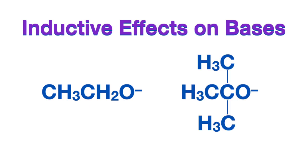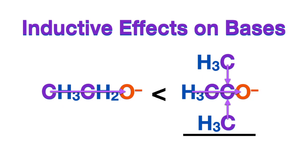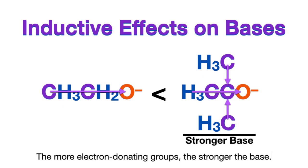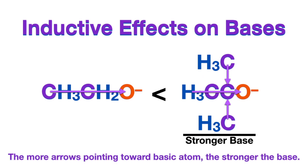In these two basic compounds where the negatively charged oxygen is the basic atom in each: on the left side, we have two carbon groups that have an electron donating effect toward the negatively charged oxygen. Whereas on the right side, we have three carbon groups and an attached carbon that all have a donating effect toward the oxygen, making it even more negative and therefore the stronger base. Once again, the more electron donating groups there are on the basic atom, the stronger the base — or the more arrows pointing toward the basic atom, the stronger the base. It's as simple as that.